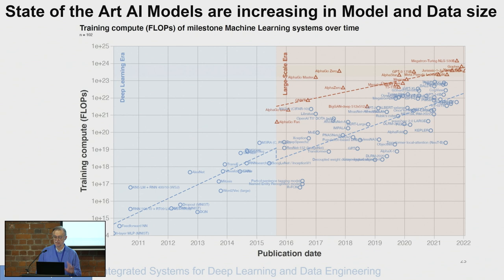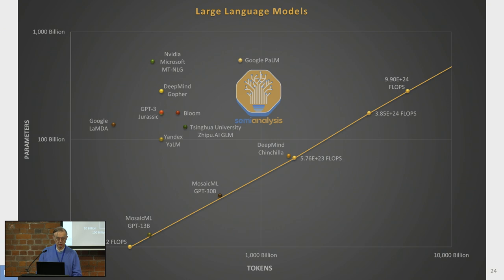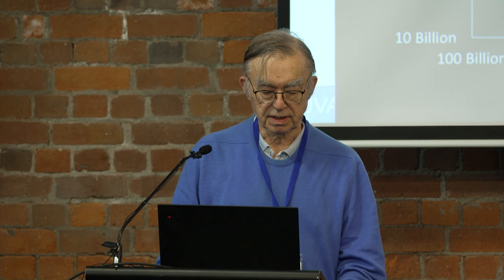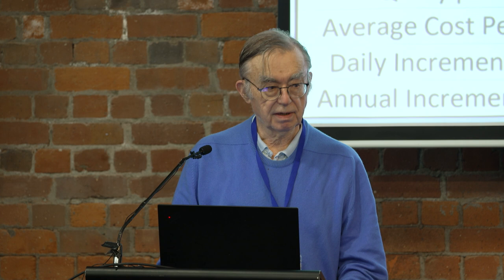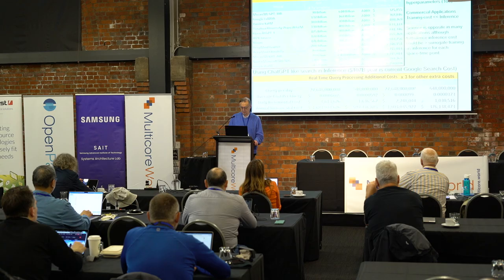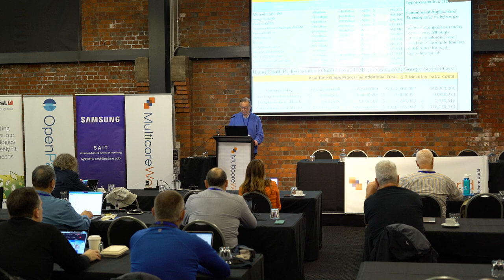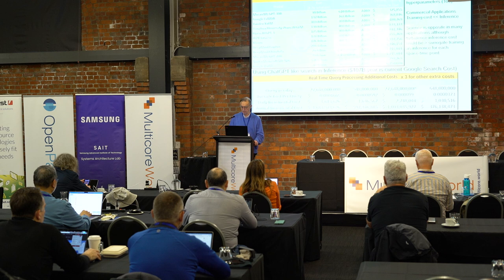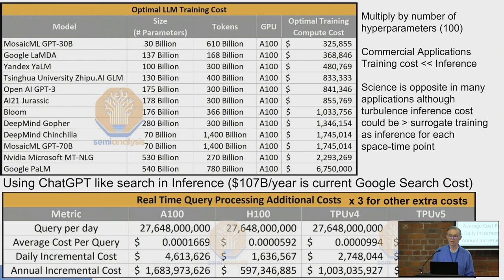These deep learning systems are very big — that's the large red graph, and typically it's done by industry, not academia. Looking at number of parameters versus model size versus data size, and the cost: using A100s to train the Google PaLM system costs nearly $7 million. But you have to do this once for each hyperparameter, and maybe you have 100 hyperparameters. So that's really almost a billion dollars for a realistic system.